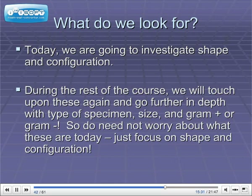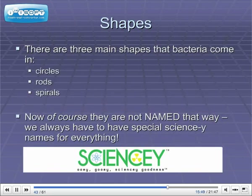Today we're going to investigate shape and configuration. During the rest of the course, we'll go further in depth with the type of specimen, size, and gram-positive or gram-negative. So just focus on shape and configuration. There are three main shapes that bacteria come in: circles, rods, and spirals.